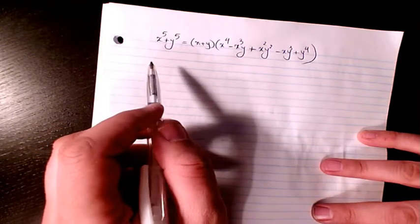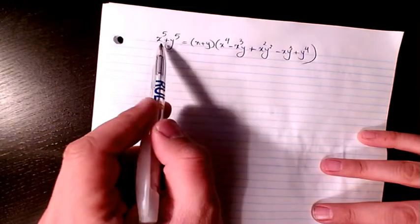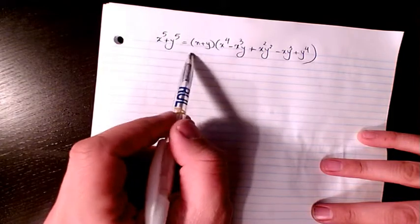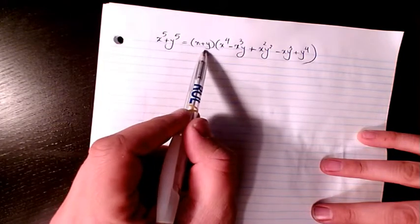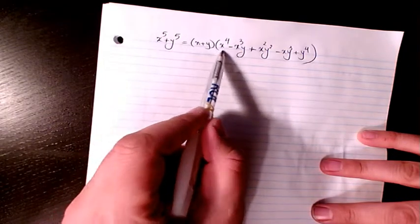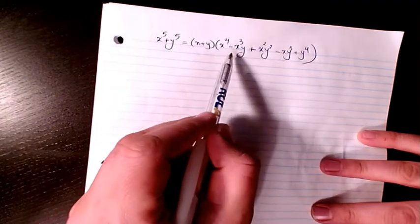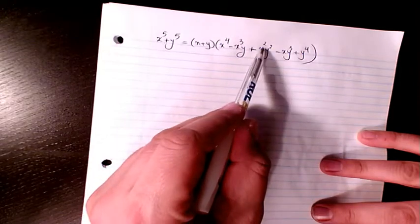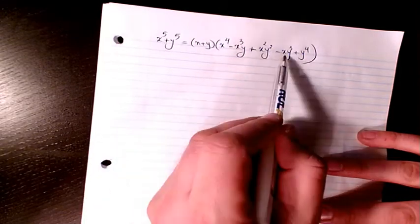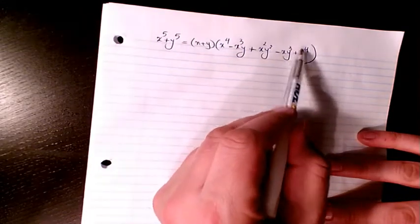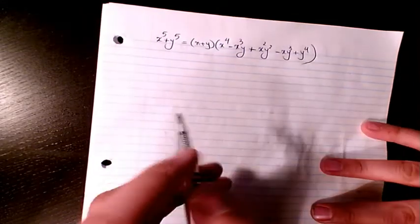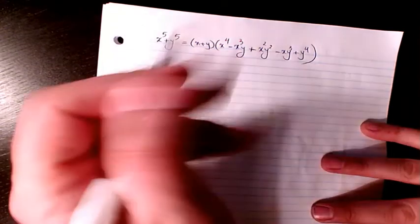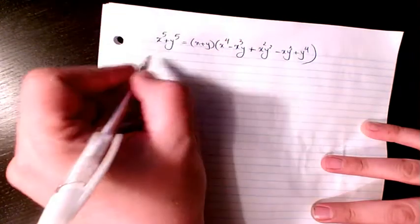In this video, I have x to the power of 5 plus y to the power of 5 equals x plus y times x to the power of 4 minus x cubed y plus x squared y squared minus x y cubed plus y to the power of 4. So if I want to prove it, I can multiply each of these terms by the bigger terms in this bracket.